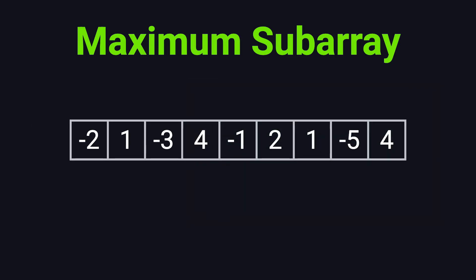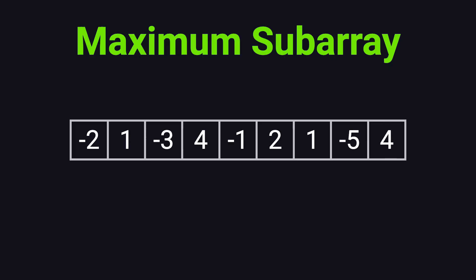Let's walk through an example. Here's the array: -2, 1, -3, 4, -1, 2, 1, -5, and 4. We want to find a contiguous part of this array whose sum is the largest possible.